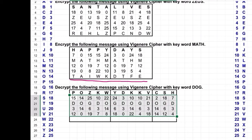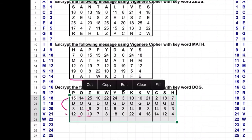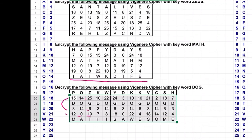Then we're going to subtract: 15 minus 3 we get 12; 14 minus 14 we get 0; 25 minus 6 we get 19, and so on down the way since we're decrypting. And lastly we'll look those numbers up to see what the corresponding message is.